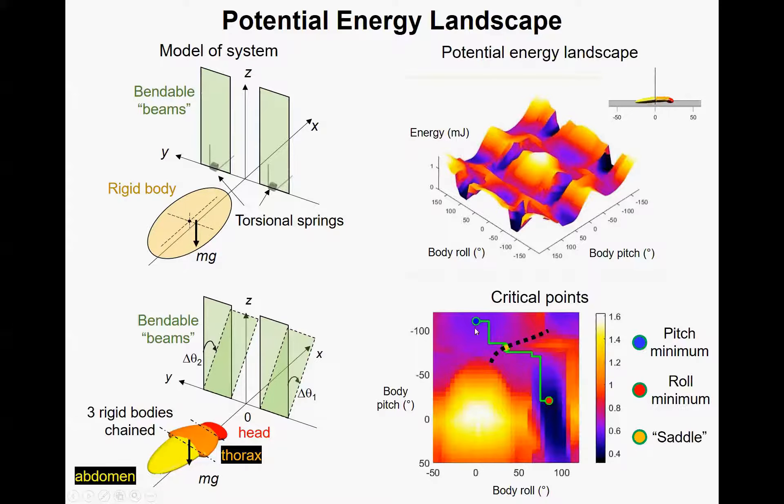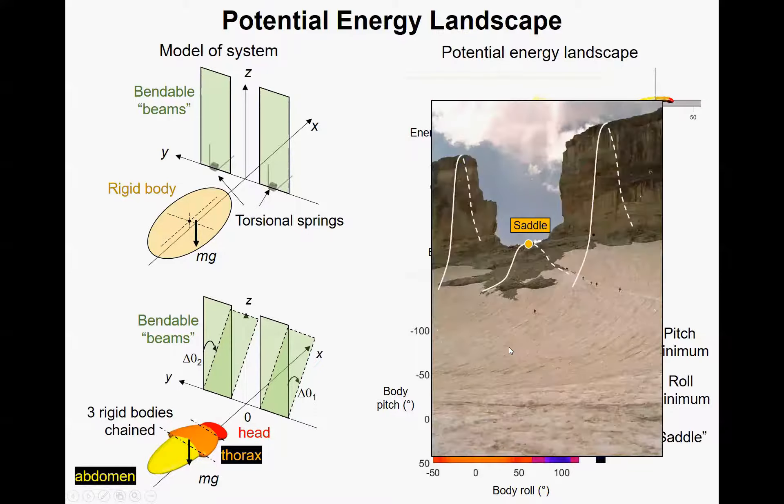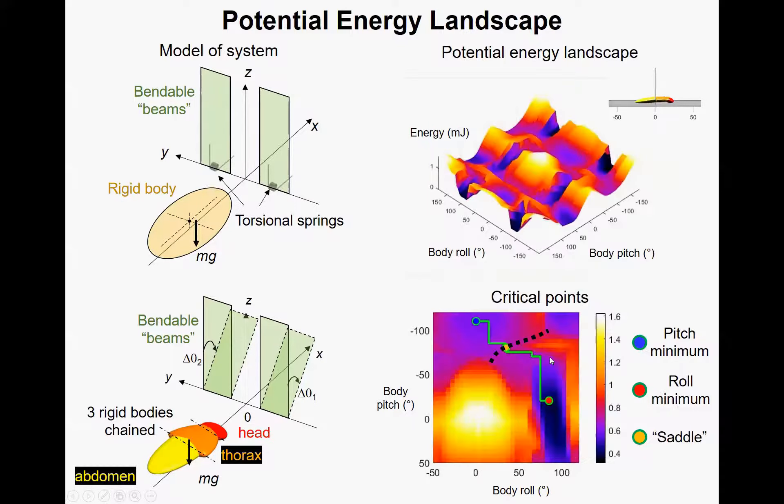To get from this pitch basin to this roll basin, we found a virtual path as the green line shows, linking the pitch and roll minimum. Then we get the point with the maximum energy on this path as the saddle point, this orange dot. So the saddle point is just like this picture shows. To go from this basin to another basin behind the hill, the best option is to go via the saddle point in the middle. So the energy barrier between pitch and roll basin is defined as the energy difference between this pitch minimum and the saddle point.